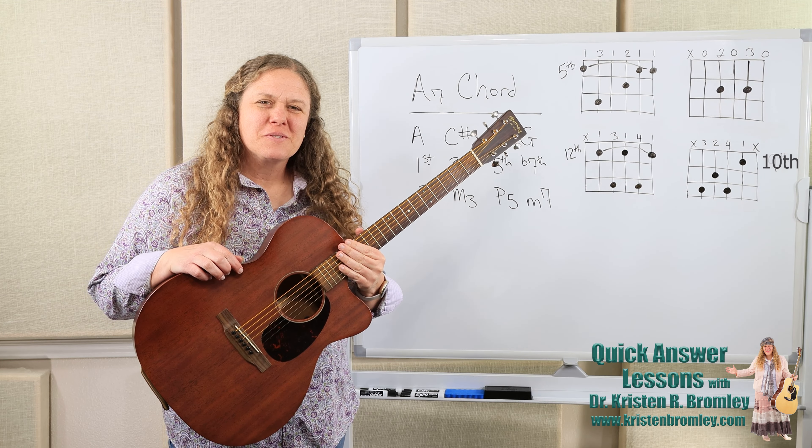Intervallically — meaning the distance between two pitches — our A is known as the root. The root is the starting pitch of the scale, the starting pitch of the chord, usually the lowest note of the chord, and the pitch that the chord is named for. Above the root, the C sharp is a major third. The E is a perfect fifth above the A. Those three notes as a triad make an A major chord. And then the G is a minor seventh, or a flatted seventh, above the A.